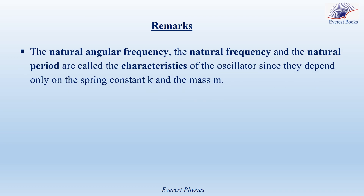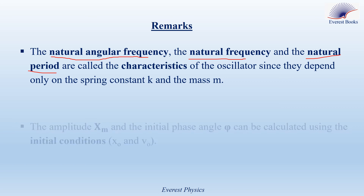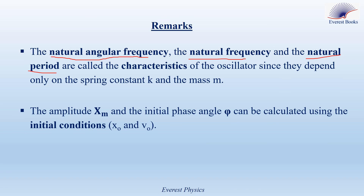Finally, let's focus on two remarks. First, the natural angular frequency, natural frequency, and natural period are called the characteristics of the oscillator, since they depend only on the spring constant k and the mass m — they do not change even if we change the initial conditions x0 and v0. Second, the amplitude xm and the initial phase angle phi can be calculated using the initial conditions x0 and v0.